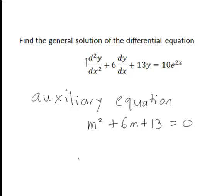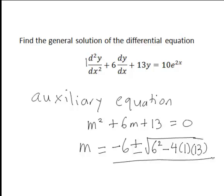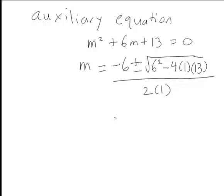Then solving that for m, no obvious factorization in this case, so let's use the quadratic formula. That will become negative 6 plus or minus the square root of 6 squared minus 4 times 1 times 13 divided by 2 times 1. And that then becomes negative 6 plus or minus the square root of negative 16 divided by 2. And the square root of a negative number becomes something in terms of j.